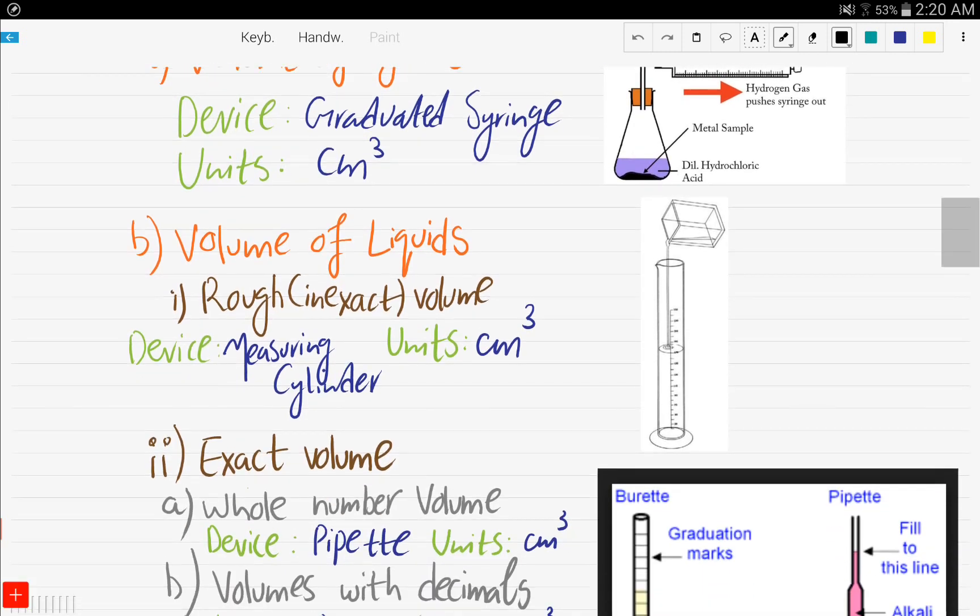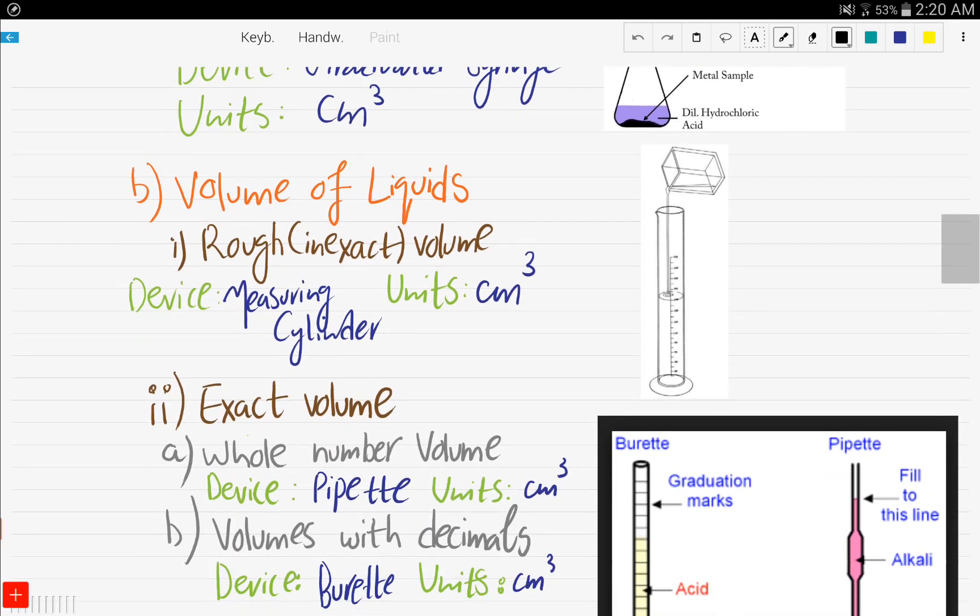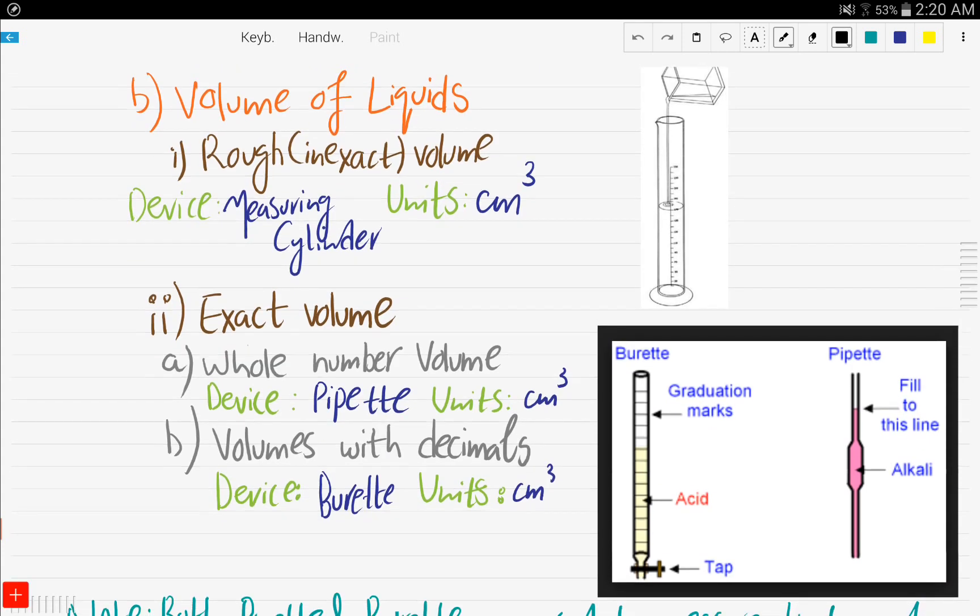Now, if you want to measure the volume of a liquid, you have to ask yourself a question. You want a rough inexact volume or do you want an exact volume? If your answer is rough, then the device that you must be using is a measuring cylinder and the unit is centimeter cube.